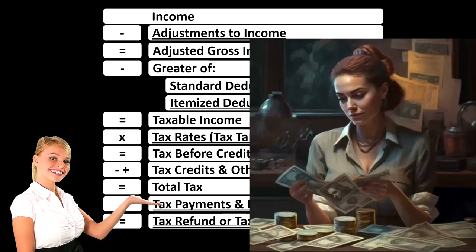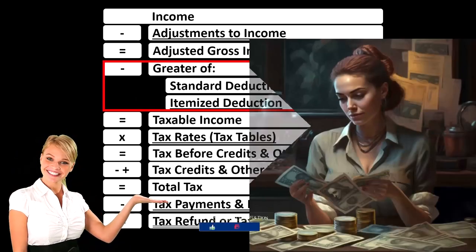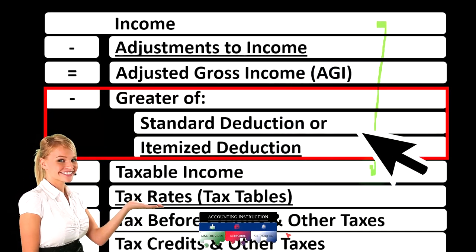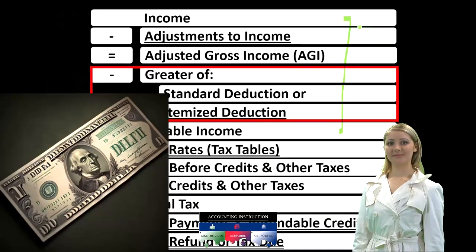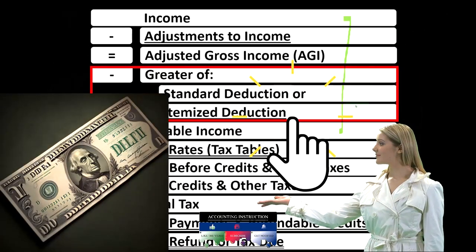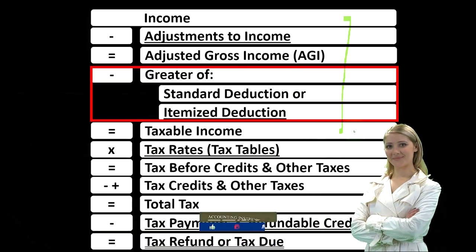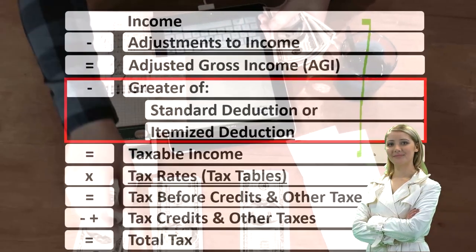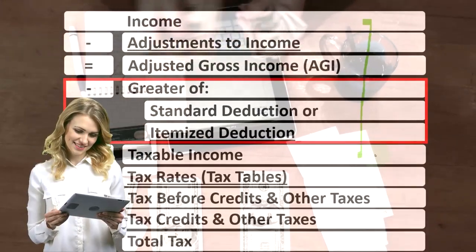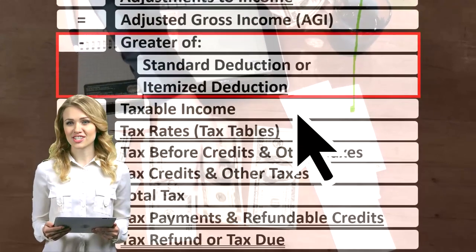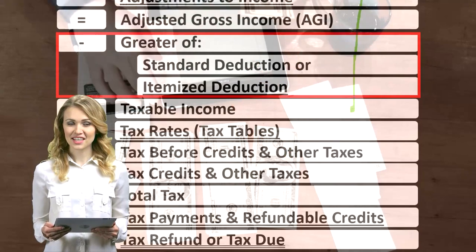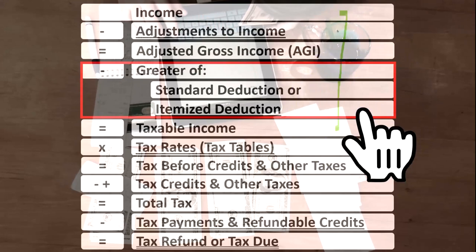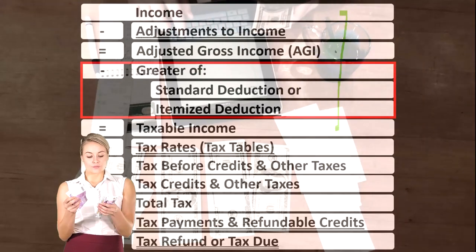Looking at the income tax formula, we're focused down here on the itemized deductions. The first half of the income tax formula is in essence an income statement where we have income minus the equivalent of the expenses — the deductions — equals the equivalent of net income, that being the taxable income. We've got income minus the different kinds of deductions, and the above-the-line deductions or adjustments to income get us to the subtotal of adjusted gross income.